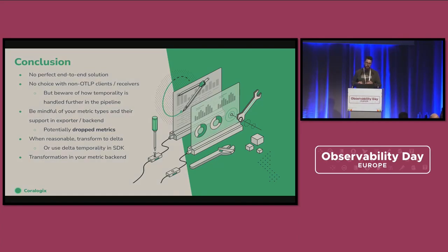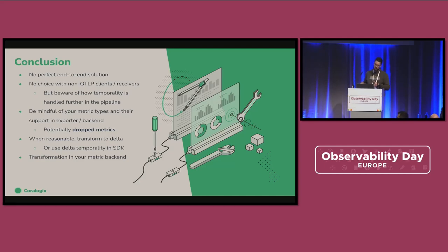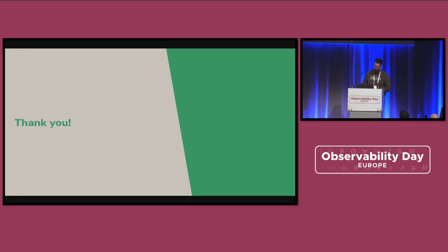Just a short conclusion: there's no perfect end-to-end solution. As you go through the different steps in the pipeline, it's good to think about what happens with those data points and how they will end up on the other side. Pay attention especially if any data can be dropped. When reasonable, you can opt to transform to delta — whether because your backend prefers delta, or because you want to do further processing like going from cumulative to delta to rate. And that's where we end it. Thank you.